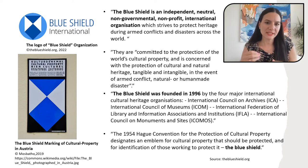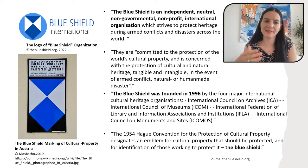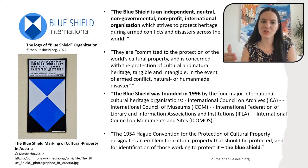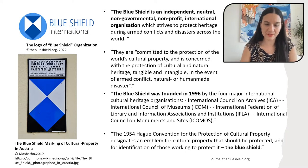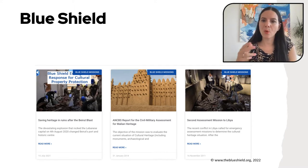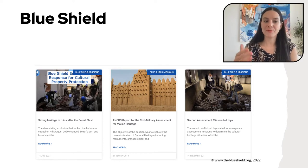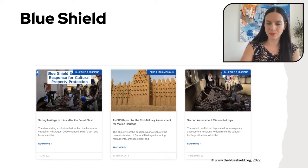Protection during armed conflicts is a special concern of Blue Shield. But it is also in their mission statement to have preparation and training of those responding to cultural and natural heritage damage during conflicts or natural disasters. They have different missions — for example, the Mali mission, where the goal was to evaluate the current situation in Northern Mali after the recent armed conflict. You can scroll through their website and see all of their missions.